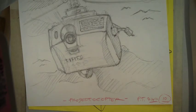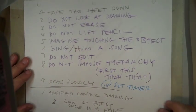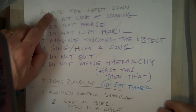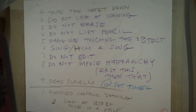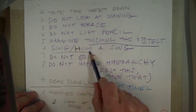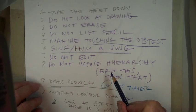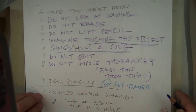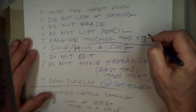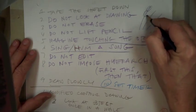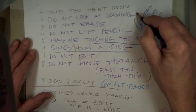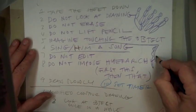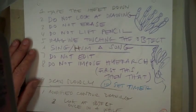So let me put the list of things again up on the screen. We'll end with that. And then we'll just draw. So, yeah, let's tape it down. Don't look at the drawing. Do not erase. Do not lift pencil. Imagine touching the object. Sing a song. Do not edit. And don't worry about doing some parts first and then the others. Again, which is like the opposite of the way we normally draw. If we drew a hand, we would say, I break it down into parts. Here it's kind of saying, no, just draw it. Just like, don't worry about it.